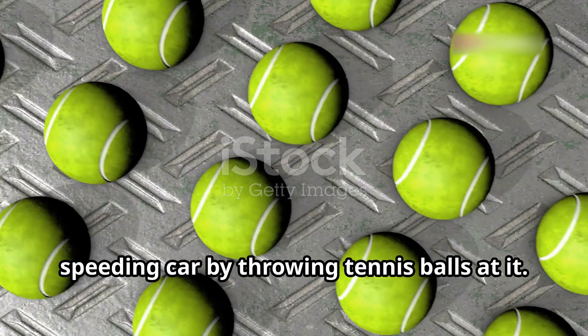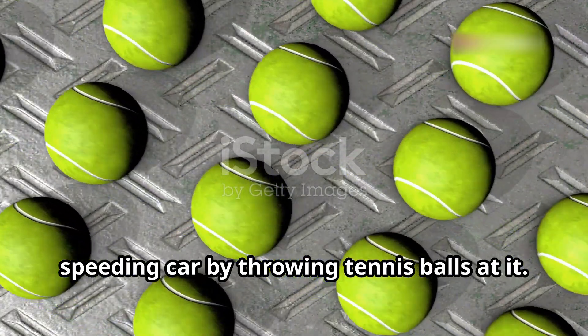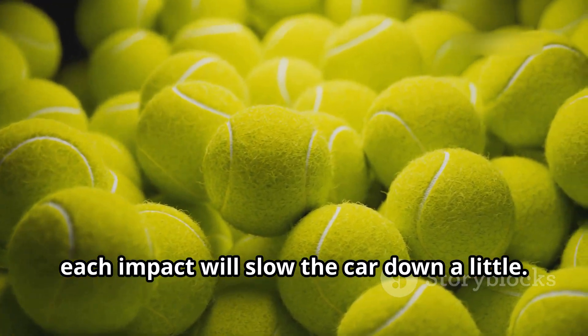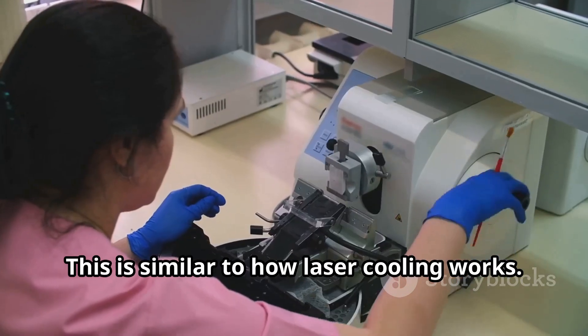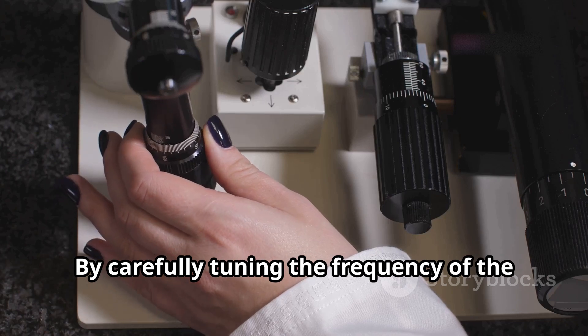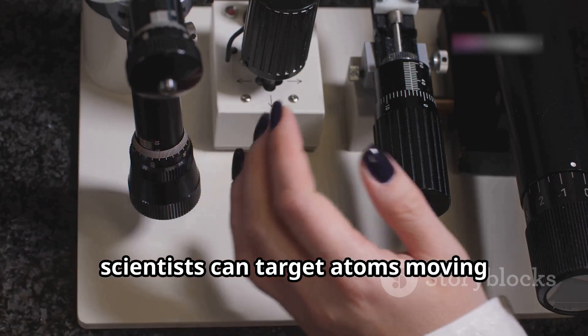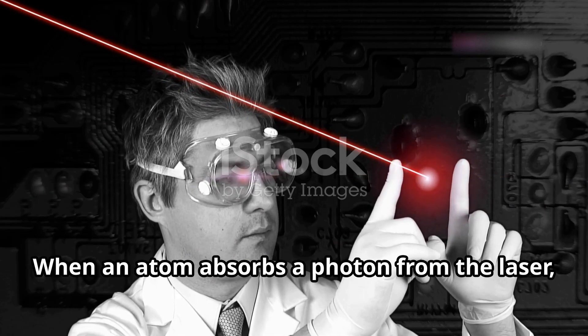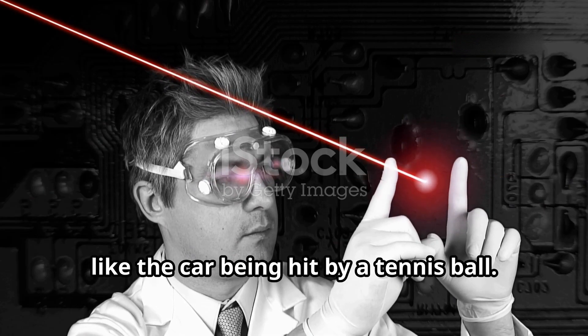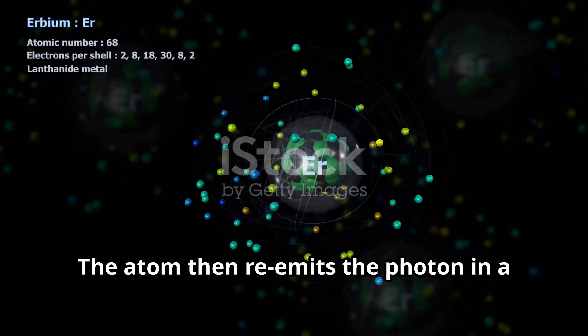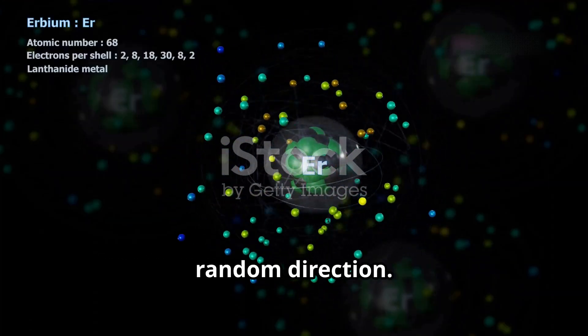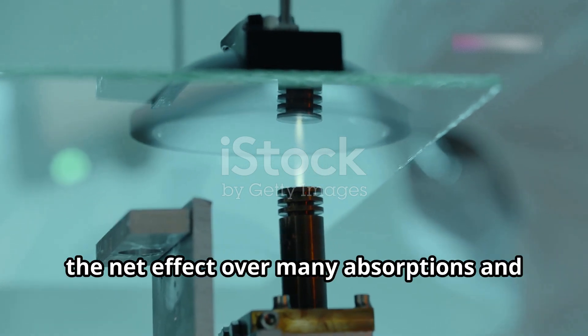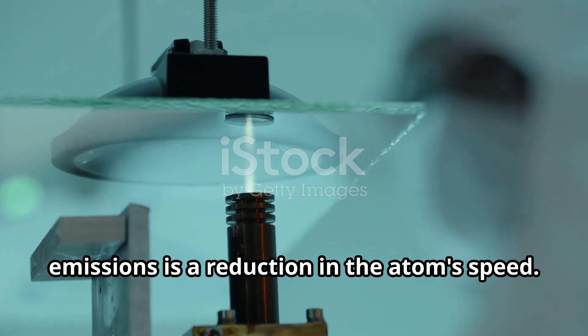Imagine you're trying to stop a speeding car by throwing tennis balls at it. If you throw the tennis balls head on, each impact will slow the car down a little. This is similar to how laser cooling works. By carefully tuning the frequency of the laser light, scientists can target atoms moving towards the laser beam. When an atom absorbs a photon from the laser, it slows down, like the car being hit by a tennis ball. The atom then re-emits the photon in a random direction. While this emission gives the atom a little kick in a random direction, the net effect over many absorptions and emissions is a reduction in the atom's speed.